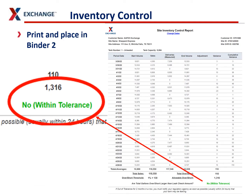Once you get to the inventory control reports, they take a little while to load too. All you're looking for is the green area down here at the bottom — it says you are not leaking and that you're within tolerance. You print this for each tank. This is tank one — you would print one for tank one, tank two, tank three, however many tanks you have on site, and put those in your binder too.